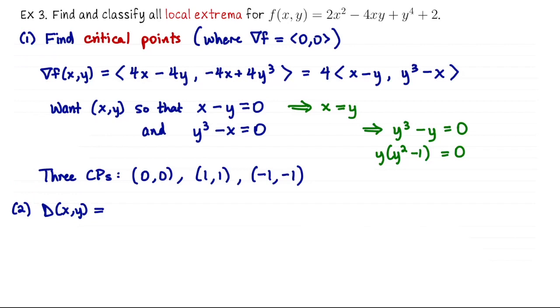My second step would be to compute D. So in general, that's going to be f_xx, which is the derivative of the first coordinate of the gradient with respect to x. So that's going to be 4 times f_yy. So that's the derivative of the second coordinate of the gradient with respect to y. So that's going to be 12y². And then minus f_xy squared. So you can either take the first coordinate of the gradient and differentiate it with respect to y, or take the second coordinate of the gradient and differentiate with respect to x. It's up to you. So it's going to be negative 4, and then we're going to square that.